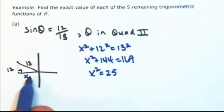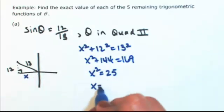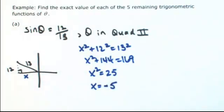Now take a look at where x is. x is in the second quadrant, so that means that x is negative. So x is actually going to be negative square root of 25, which is 5.